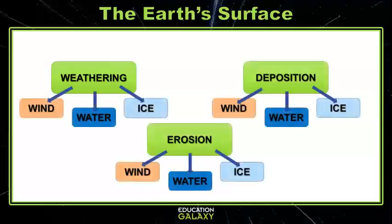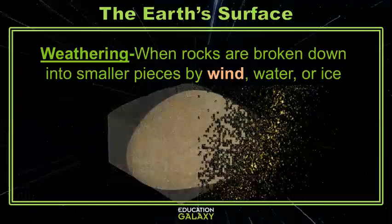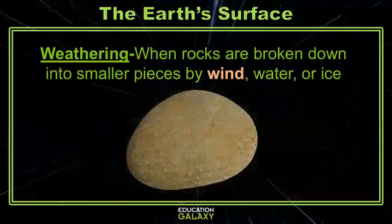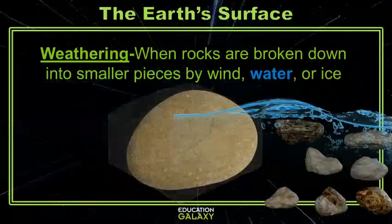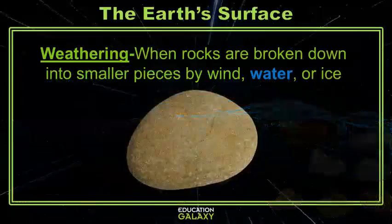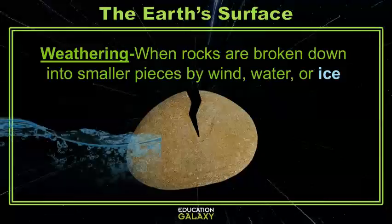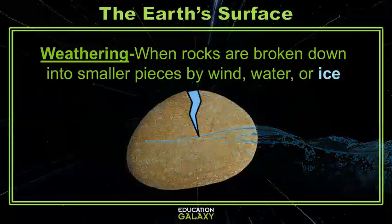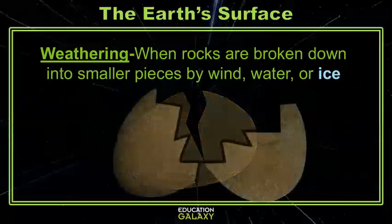Let's look at weathering first. Weathering is when rocks are broken down into smaller pieces by wind, water, or ice. Wind weathers rocks by carrying small rocks and sand and hitting a larger rock, which causes little pieces to slowly break off. Water weathers rock in similar ways — the water carries smaller rocks and as they hit the larger rock, it breaks. Ice weathers differently: it fills tiny cracks in the rock as water, and then as it freezes and expands it makes a tiny crack much, much larger until the rock breaks.